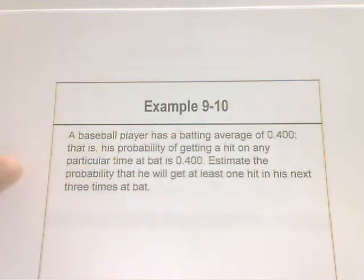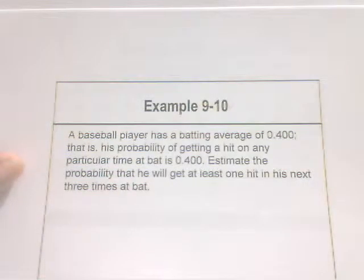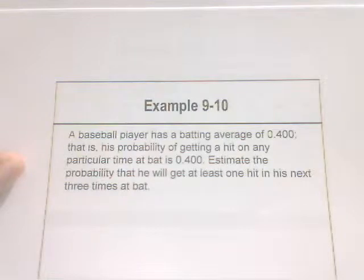In this example, a baseball player has a batting average of 0.400. That is, his probability of getting a hit on any particular time at bat is 0.400.